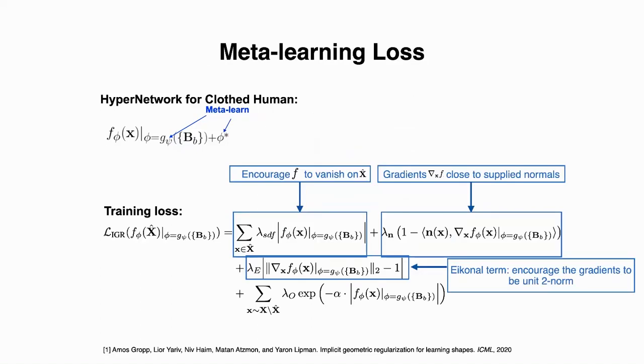We use on-surface and off-surface losses combined with Eikonal regularization to train our model, such that we can train on depth points. Normal loss is used during meta-learning stage, but we do not need the normal loss for test time fine-tuning on unseen subjects.